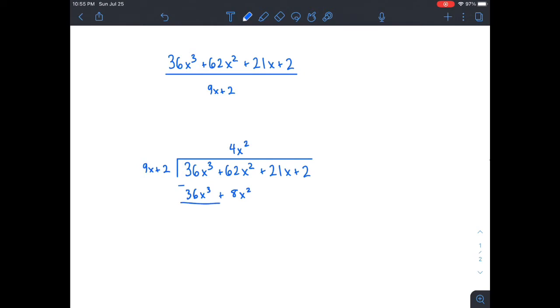Then we subtract, and over here we get 54x squared, and then we want to drop down the 21x. So now we do the same thing. How many times does 9x go into 54x squared? The answer to that is 6x.